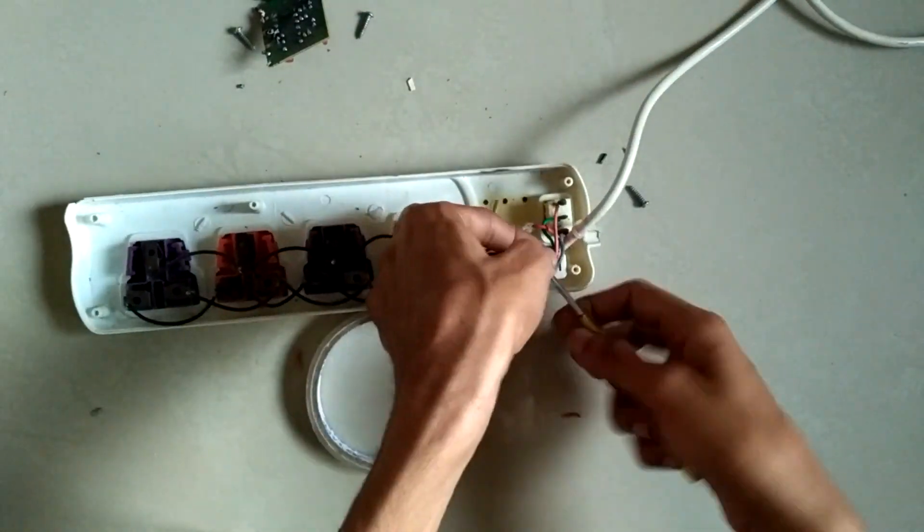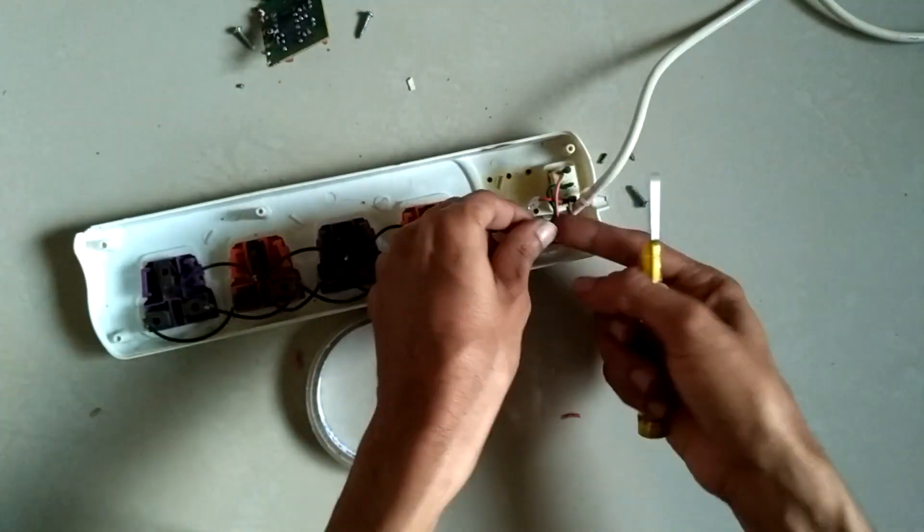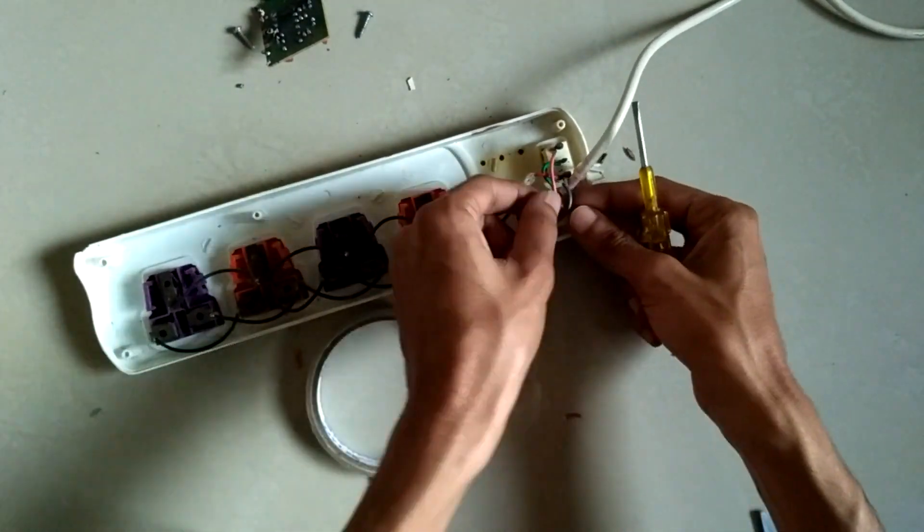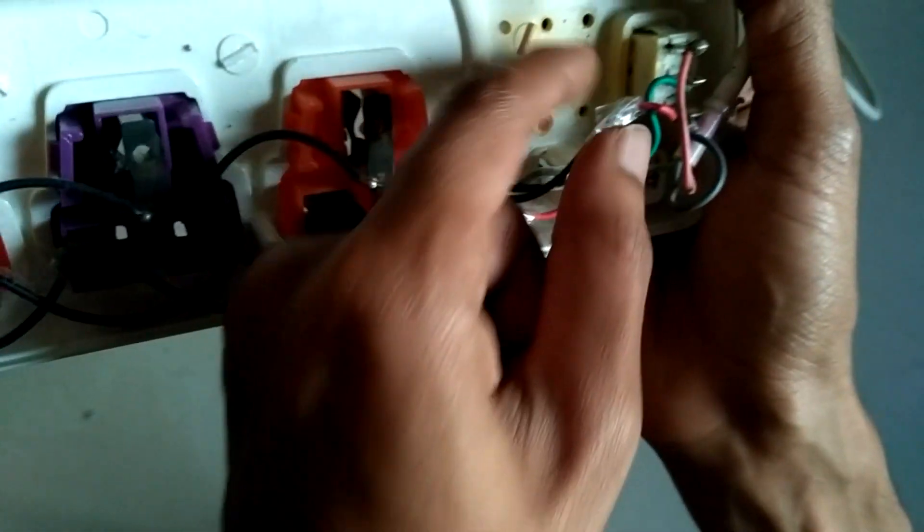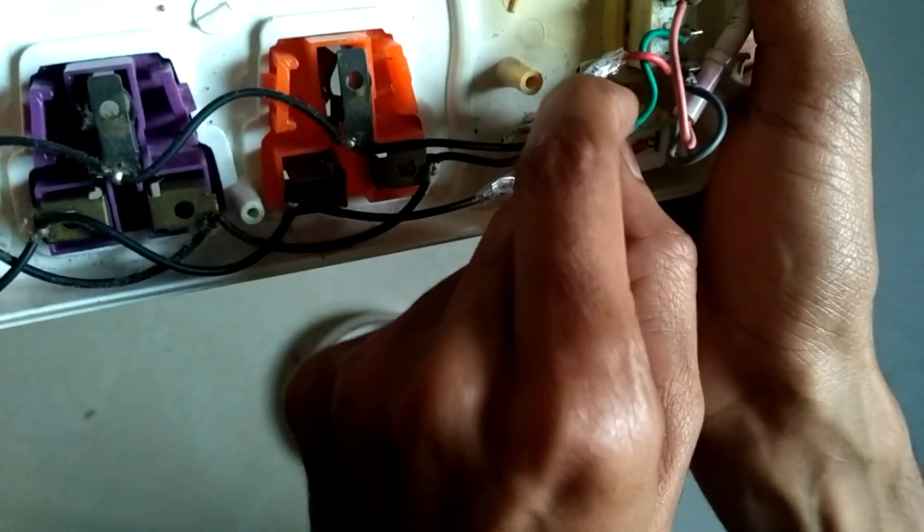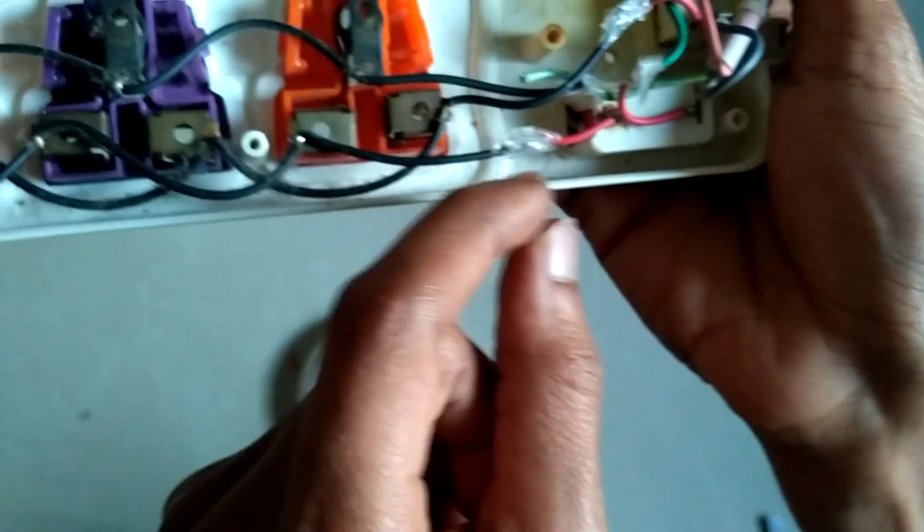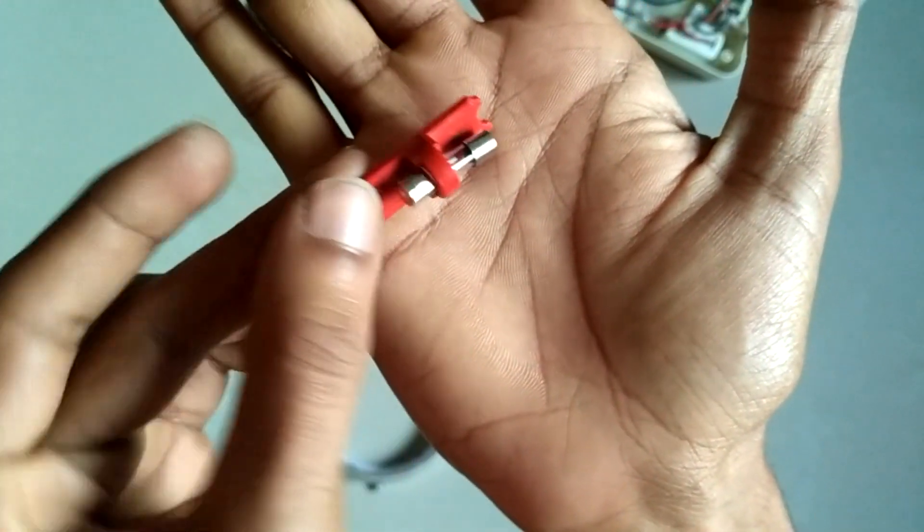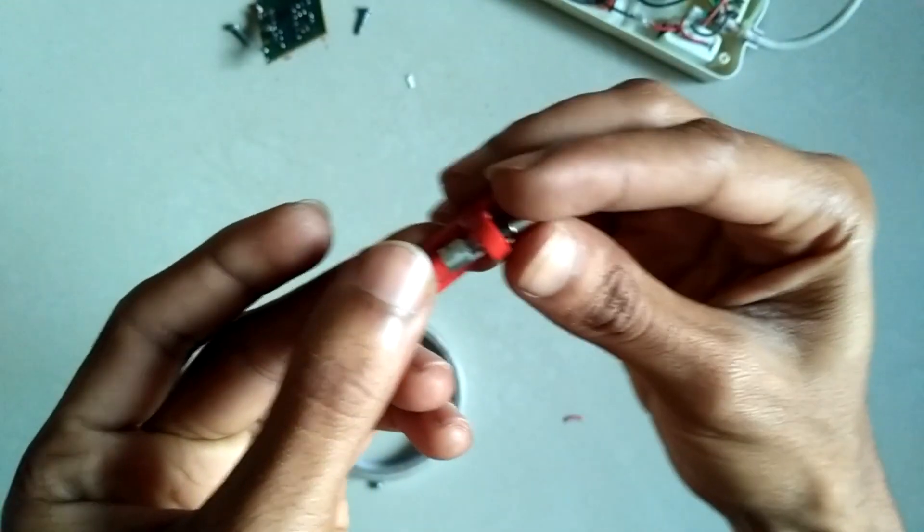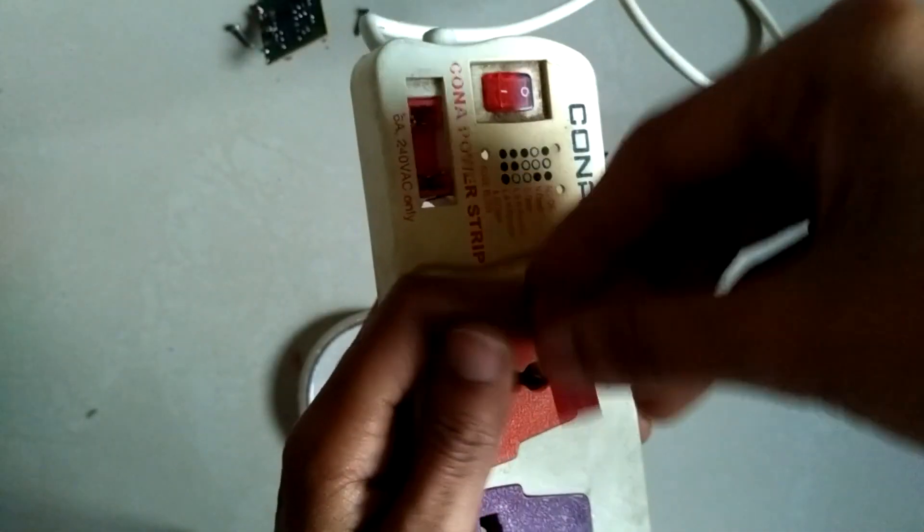You can also use insulation tubes, that is glues which will be available in electronic shops. Now you can see all the connections are binded with or wrapped with insulation tape. So this is the fuse, you can buy it at any electronic shops. Let's insert this into the fuse section.